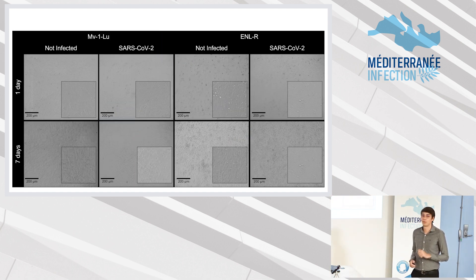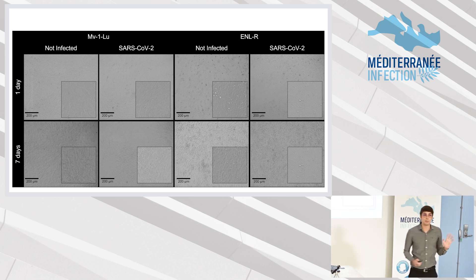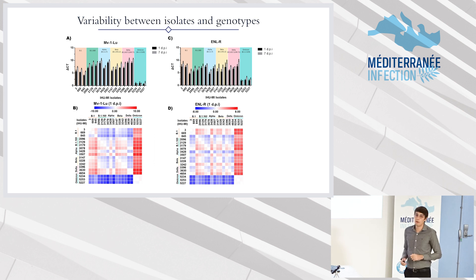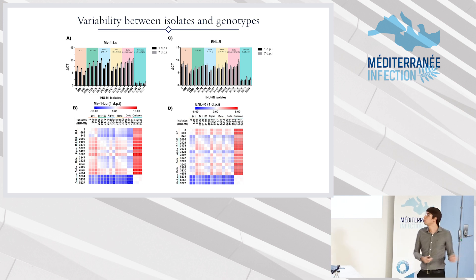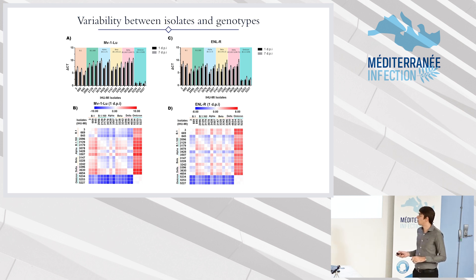These two cells don't show any cytopathic effect, even seven days post-infection. But we could detect the viral release by PCR. The interesting finding here is that there is no big difference between the first day and seven days, so the release occurs at the beginning of the infection. And for the Omicron variant, we did not see this release. Here is a heat map of delta CT between the variants — we can also see the high variability between isolates even of the same variant — and no replication for Omicron.